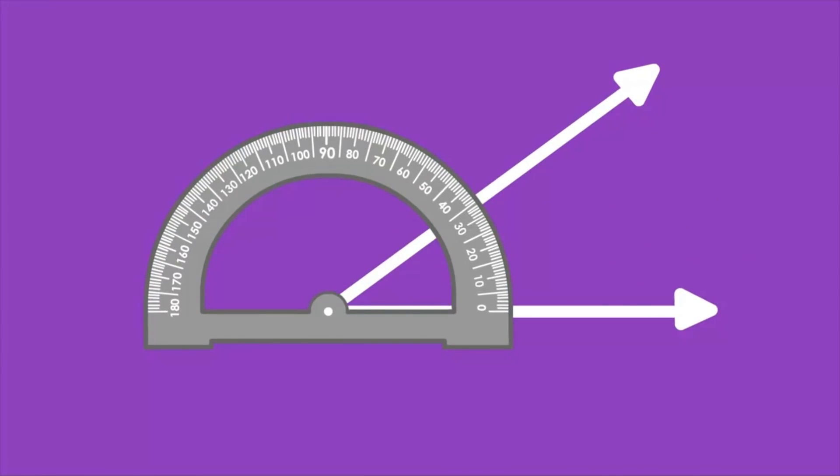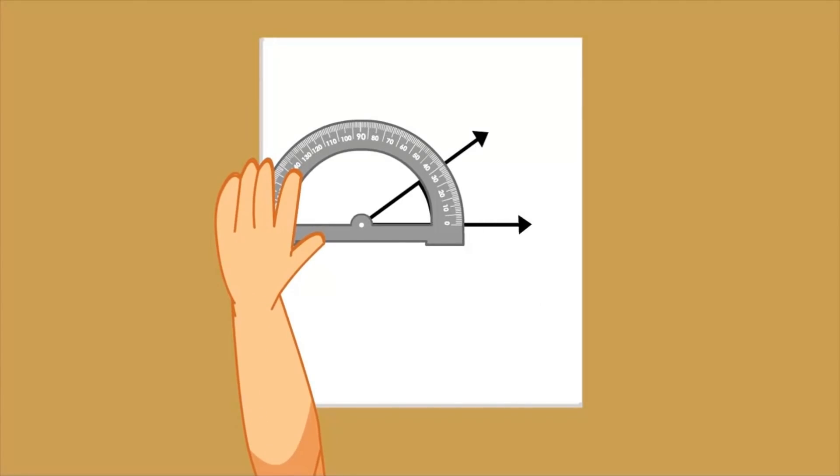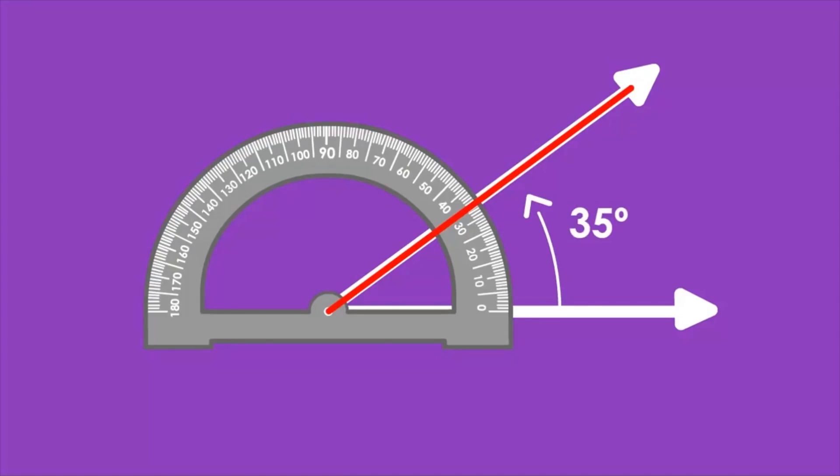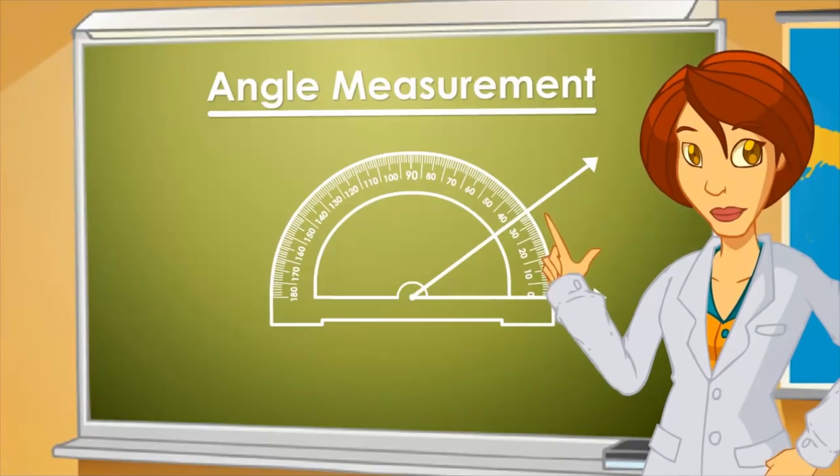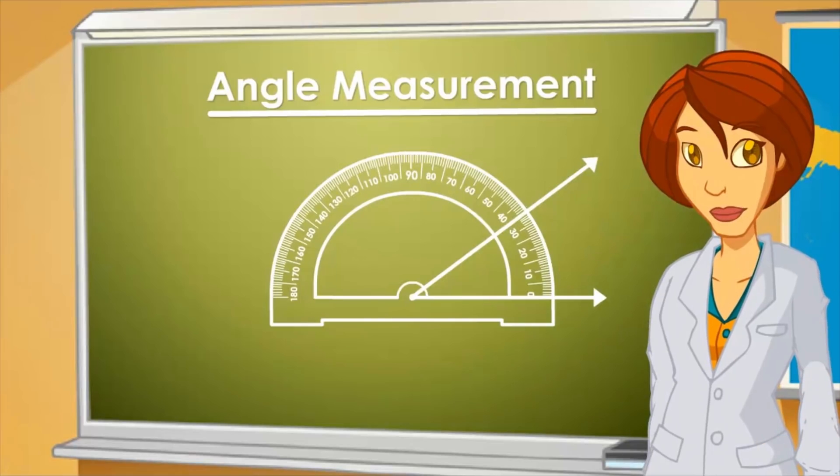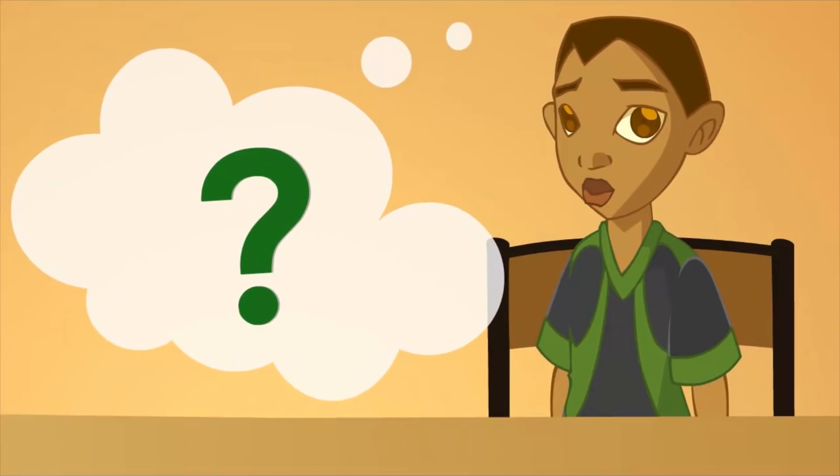That side will measure 35 degrees. We could also say that the length of that angle is 35 degrees. Why is it wrong to say that it measures 20 degrees? It's not wrong.